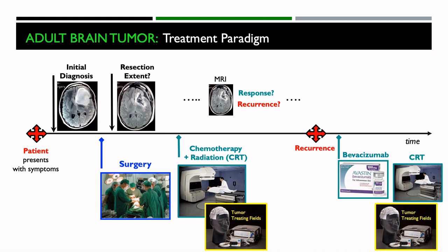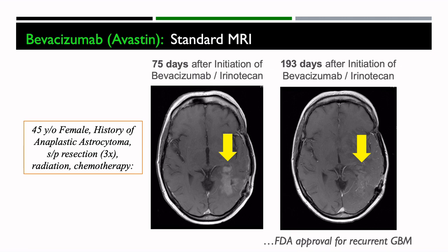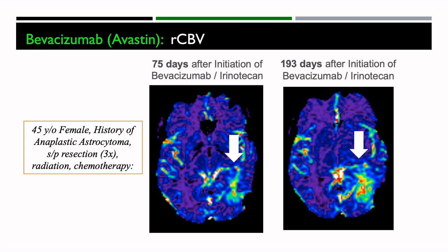At recurrence, there are several treatment options including bevacizumab or Avastin, chemoradiation therapy, and tumor-treating fields. Standard MRI is used to assess response. In an example of a patient with a recurrent glioblastoma treated with bevacizumab, at 75 days and 193 days after starting treatment, standard MRI looks like definite improvement because the enhancement is decreasing. However, looking at our RCBV maps, we see a different story — a growing degree of vascularity — which was more consistent with this patient's clinical course, as she expired just a couple of months after the exam.